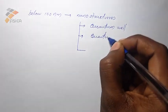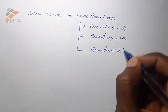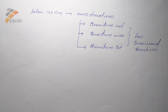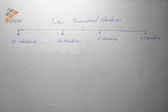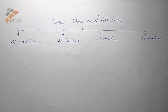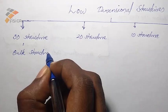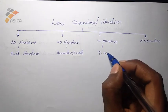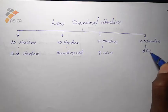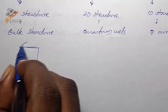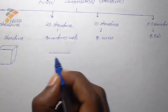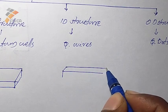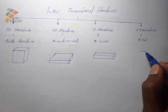These are low dimensional structures. We can classify these low dimensional structures as 3D structure, 2D structure, 1D structure, and 0D structure. The 3-dimensional structure is called bulk structure, 2D structure is called quantum wells, 1D structure is called quantum wires, and the 0D structure is called quantum dots.